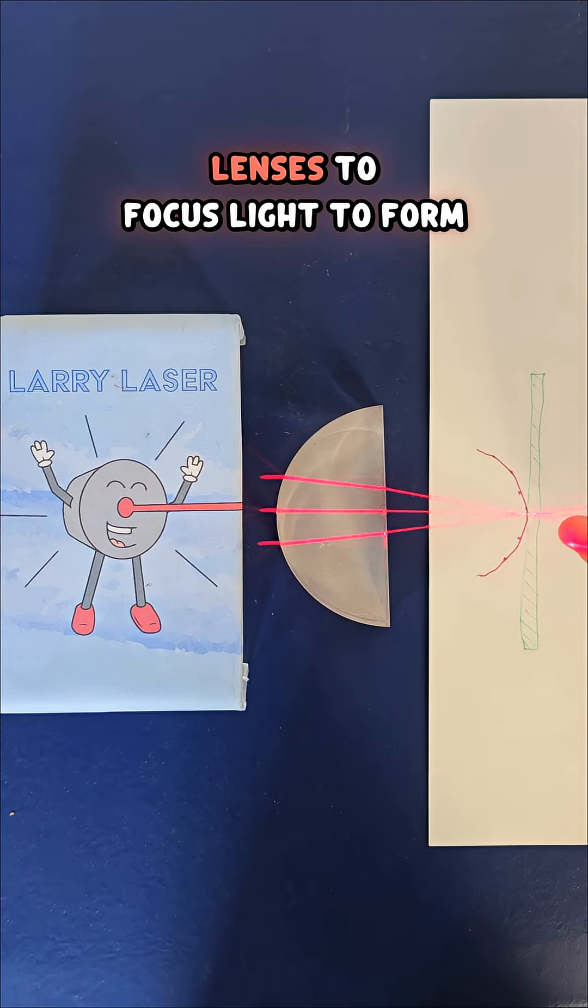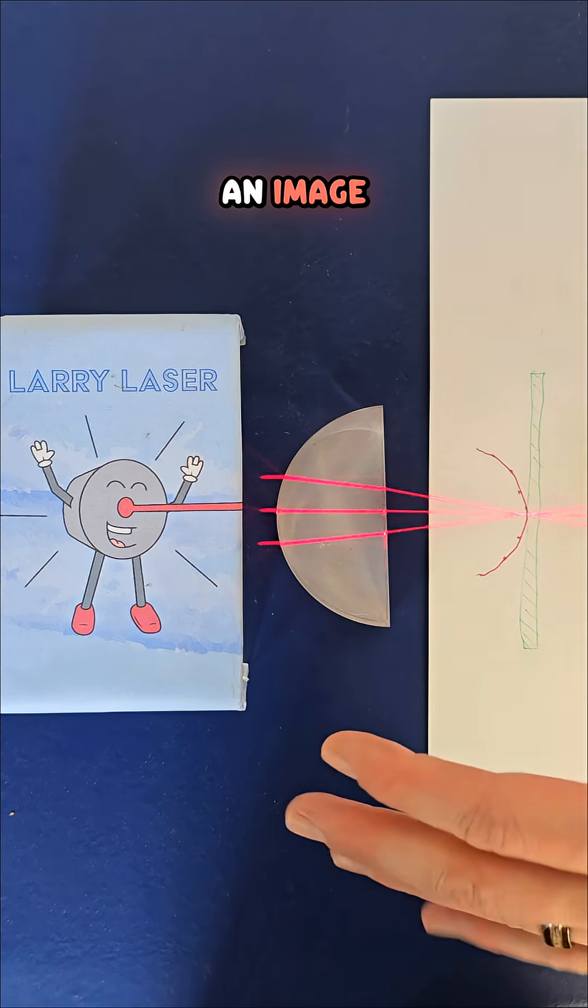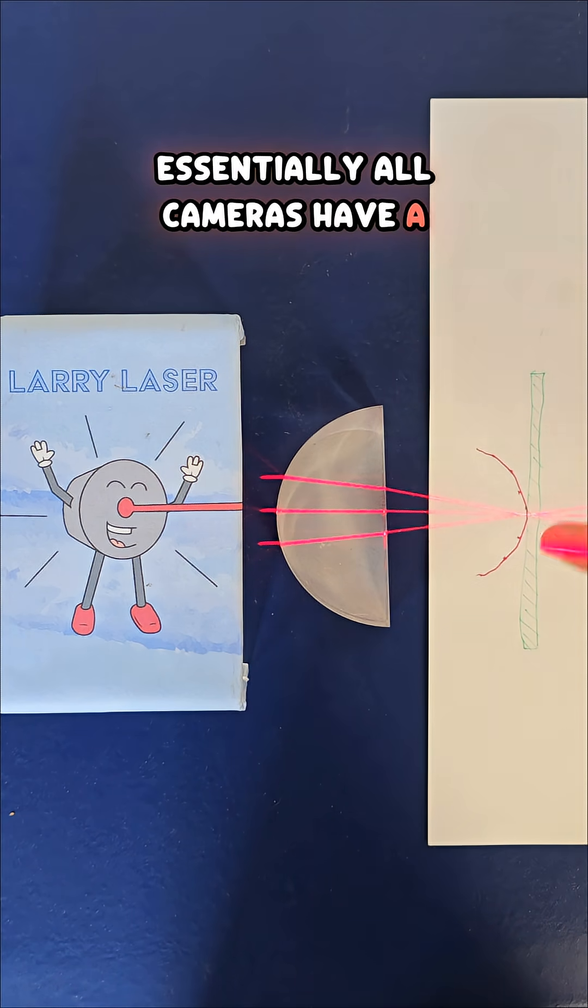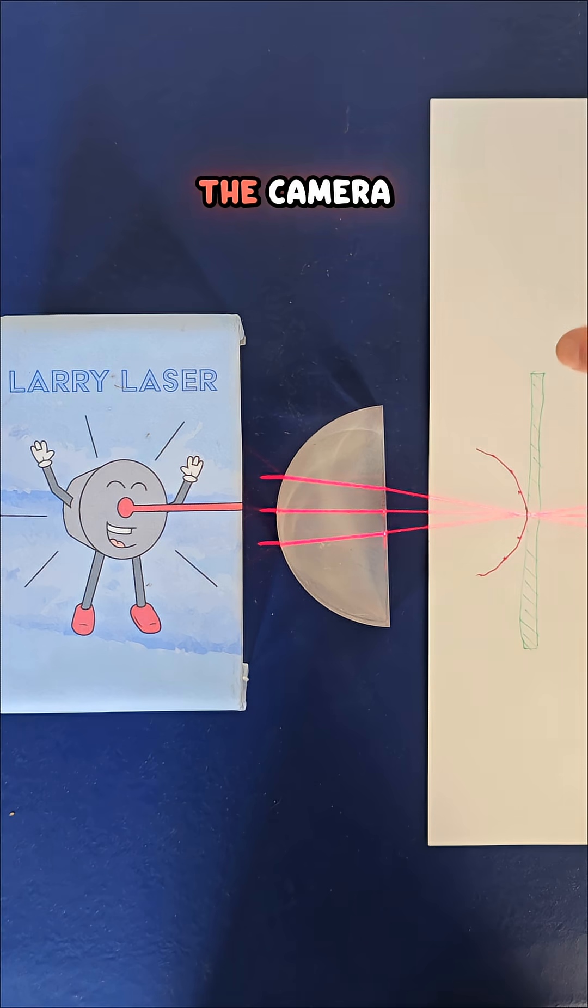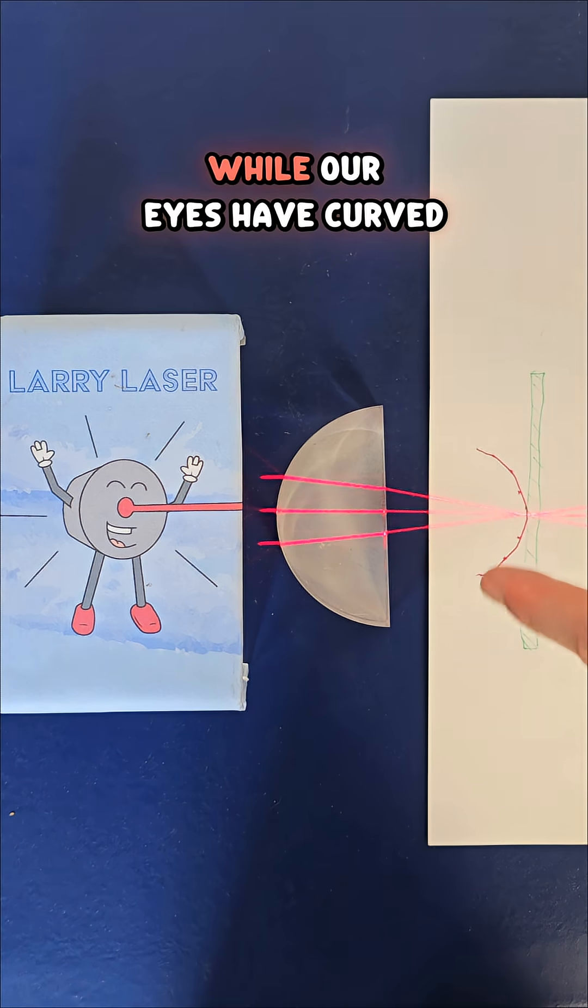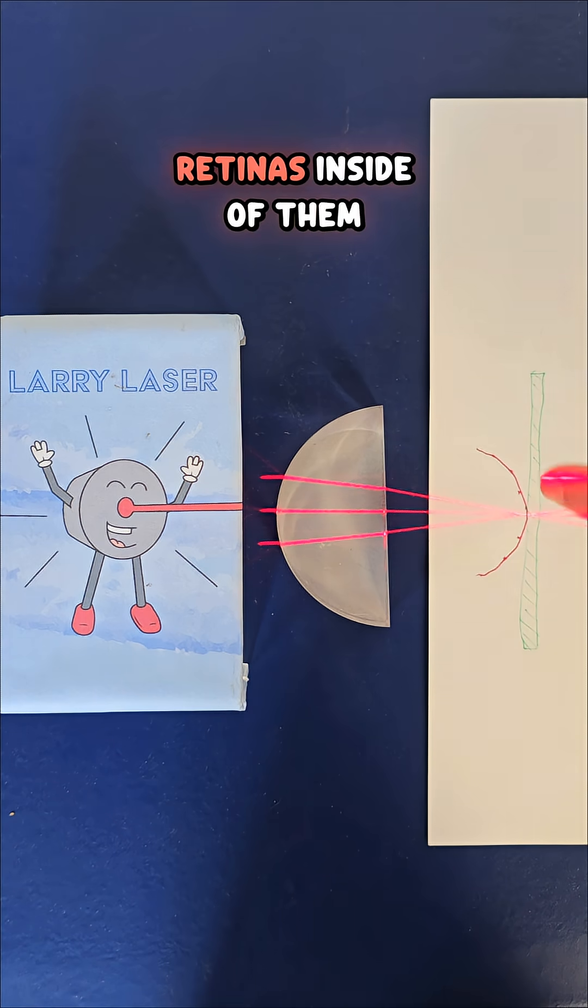Cameras and our eyes use lenses to focus light to form an image. Essentially, all cameras have a flat image sensor inside that's collecting the image, while our eyes have curved retinas inside of them.